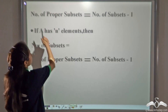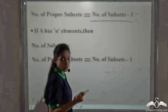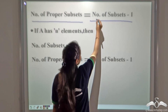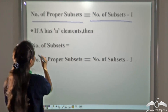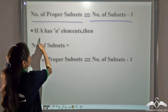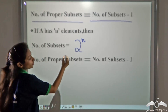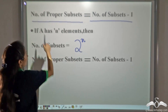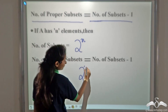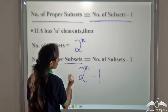The number of proper subsets equals the number of subsets minus 1. The minus 1 accounts for the set itself. So we derive the formula: if A has n elements, the number of subsets is 2 to the power n, and the number of proper subsets is 2 to the power n minus 1.